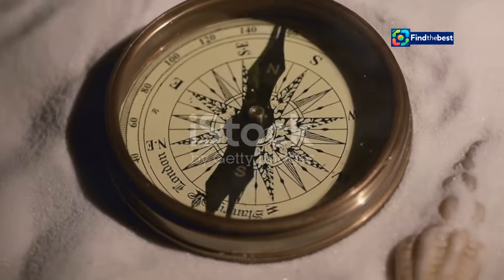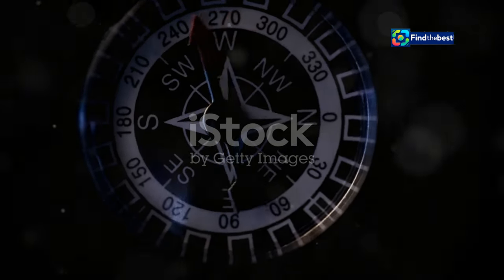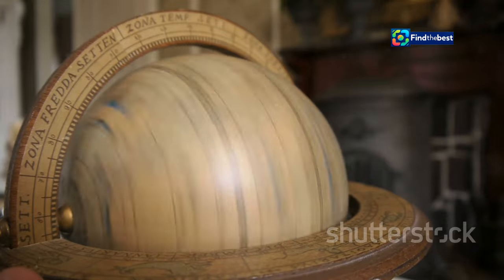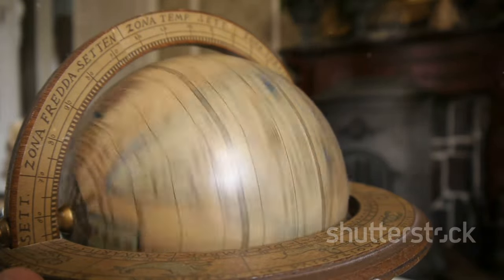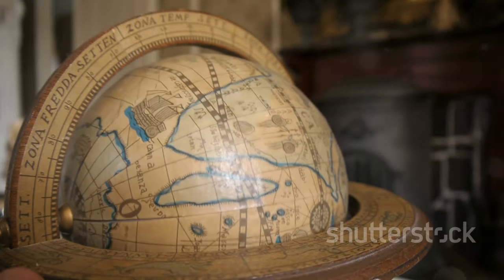Our planet is like a giant magnet. It has a north and a south magnetic pole. These poles are not the same as the geographic poles, which mark Earth's axis of rotation.